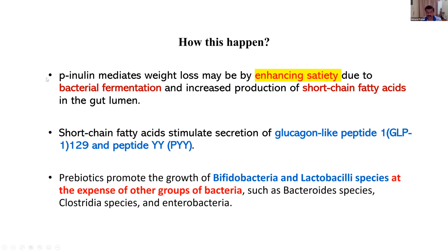P-inulin — oligosaccharides and non-digestible carbohydrates — mediates weight loss by enhancing satiety due to bacterial fermentation and increased production of short-chain fatty acids in the gut. Short-chain fatty acids stimulate secretion of glucagon-like peptides and peptide YY. Prebiotics promote the growth of bifidobacteria and lactobacilli at the expense of other groups of bacteria, such as bacteroides species, clostridia, and enterobacteria. So prebiotics appears to be a very good component of food which helps keep gut microbiota in symbiotic control.